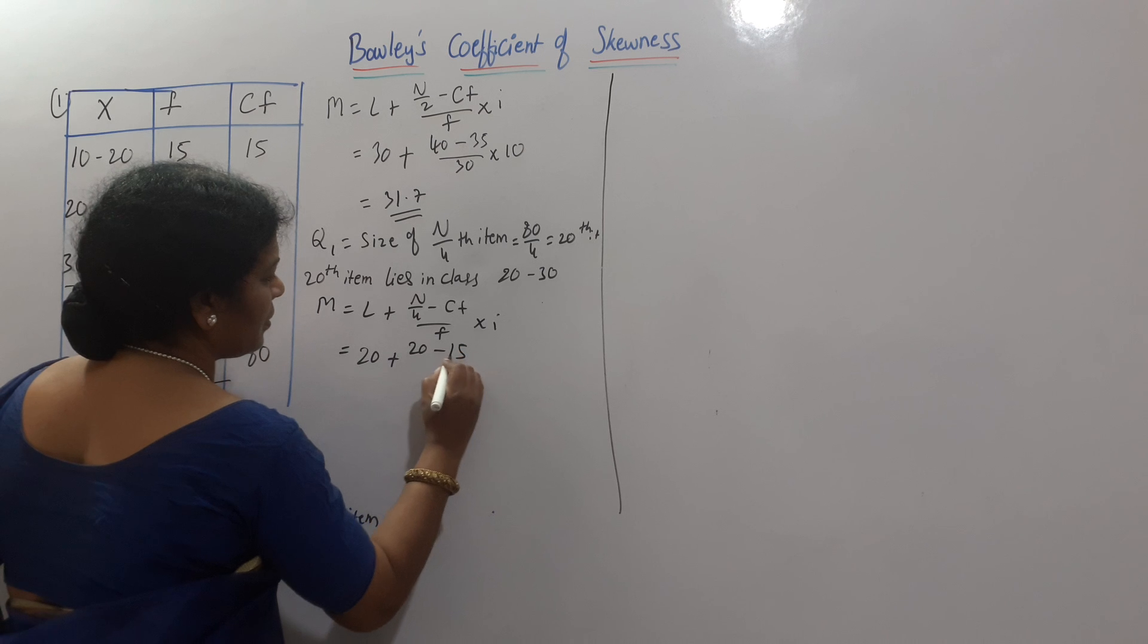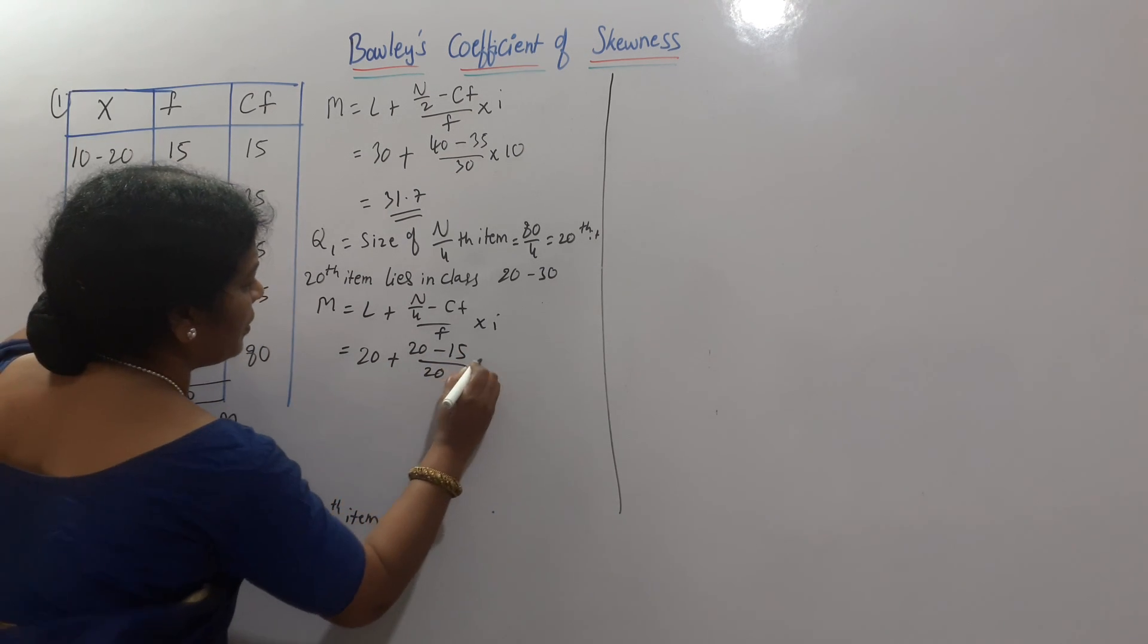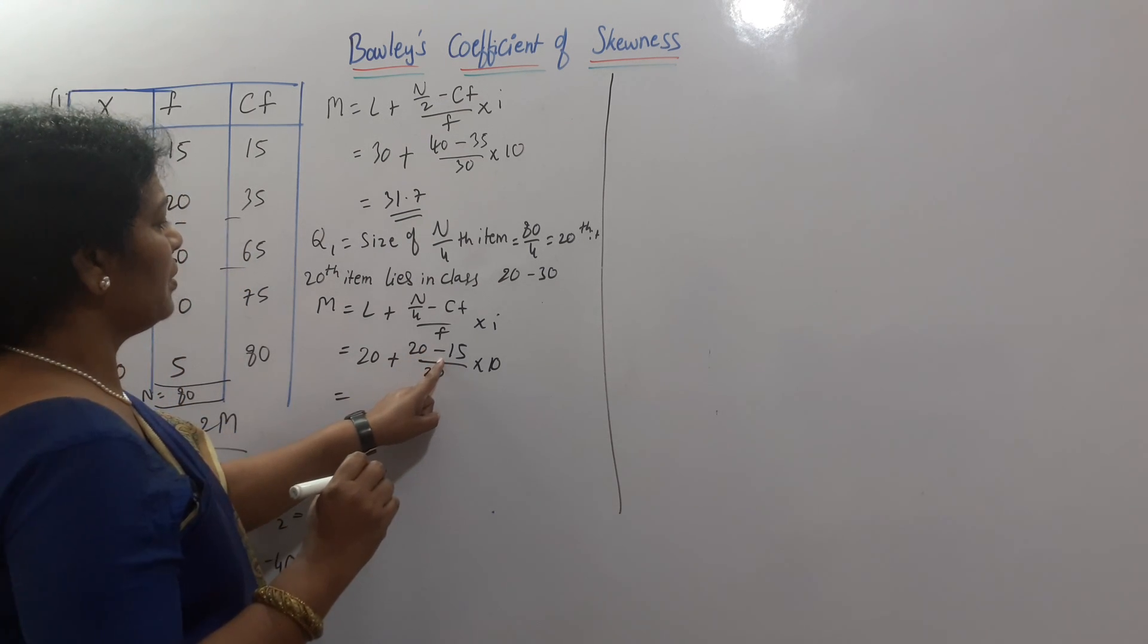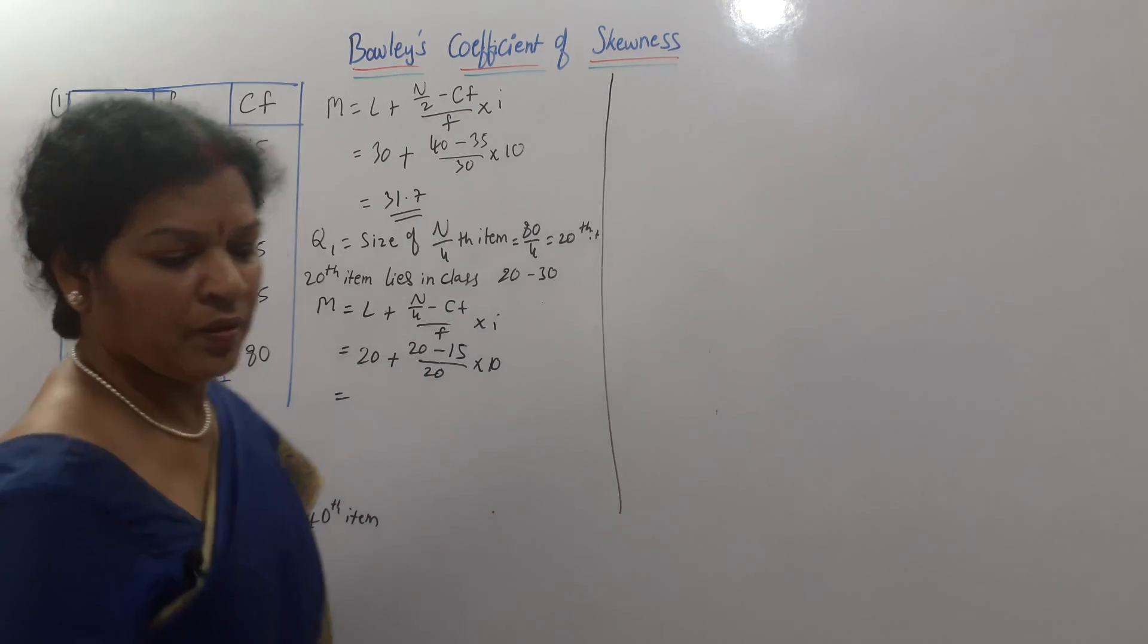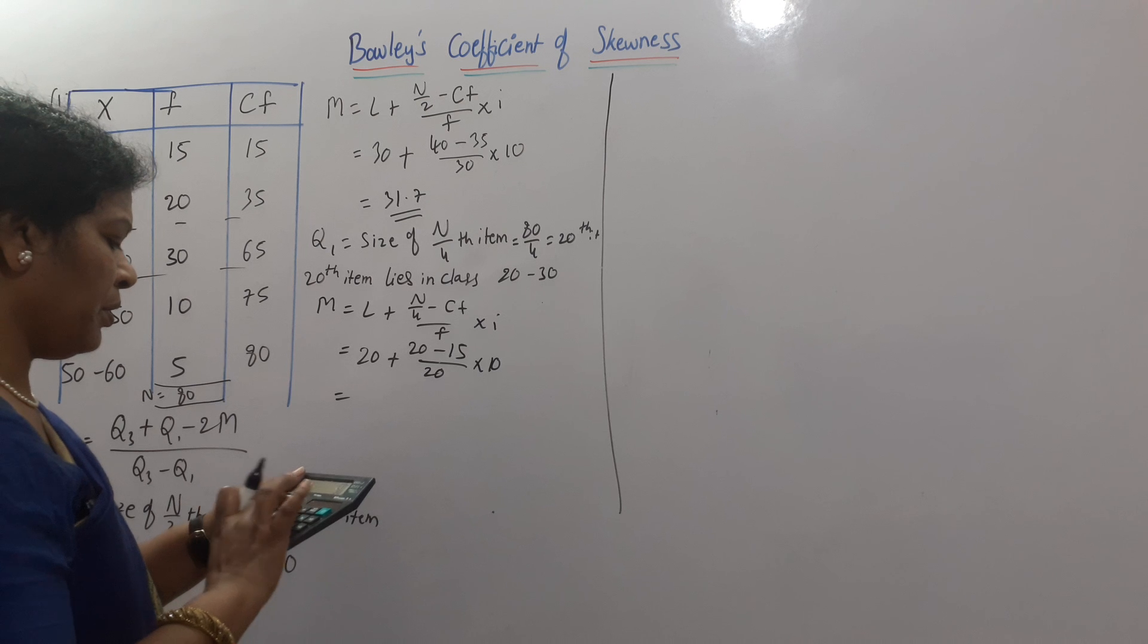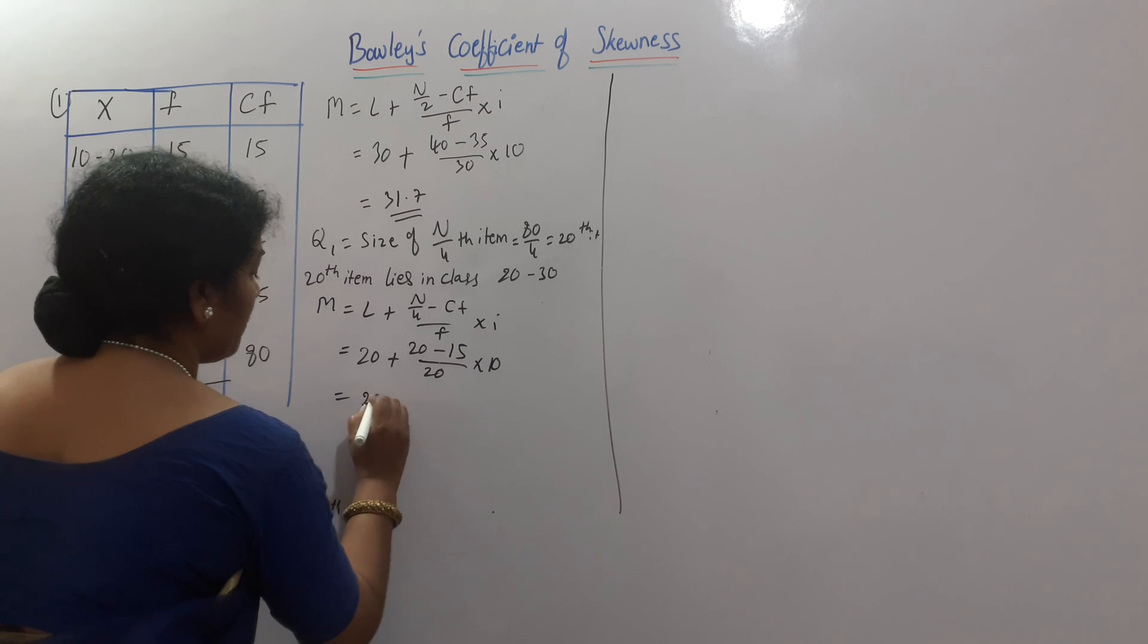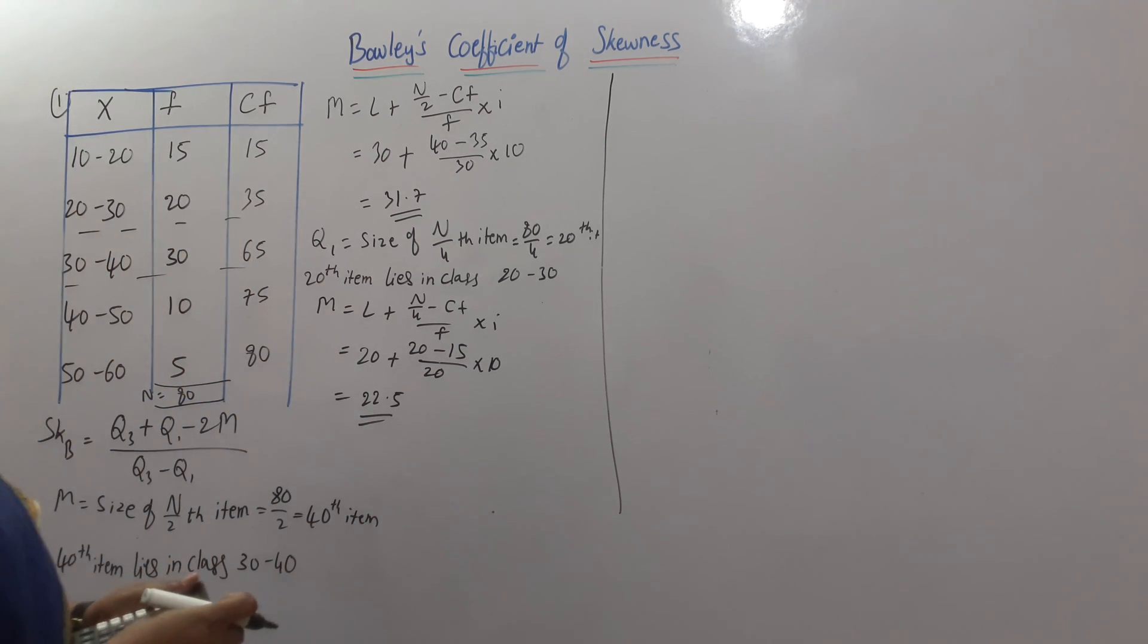By frequency. Frequency is 20 into I, as usual, 10. Calculations, if you do here is 5. 5 plus 1, 50. 50 divided by 20. 50 divided by 20. It is coming to 2.5. 2.5 means 20 plus 2.5, 22.5. So, Q1 is over.